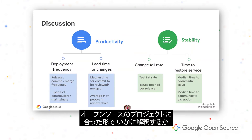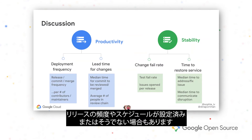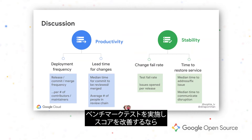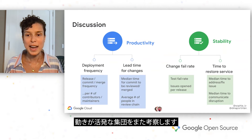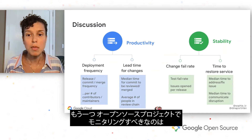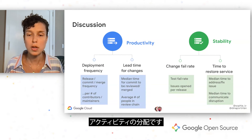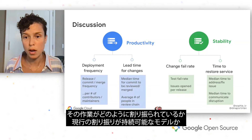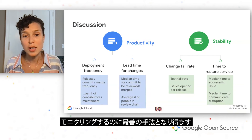I wanted to think about how we could interpret the four key metrics for open source projects. Starting first with deployment frequency: depending on your project, you may or may not have a set release cadence or schedule. Pick the metric that is most reliable and easy for you to measure, and make sure you're consistent on measuring it every time you want to benchmark yourself. Looking at release, commit, or merge frequency in the project — and thinking about that highly dynamic population — another good thing to monitor is not just the activity, but also the distribution of that activity between contributors and maintainers. This can be a great way to monitor what portion of your community is doing the most work and whether the current distribution is a sustainable model, or whether you need to invest more in encouraging new contributor growth.